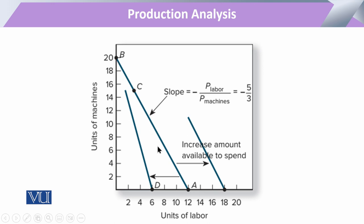اس ISO cost line کے right side پہ move کریں تو وہ part show کرتا ہے کہ expenditure incurred on production has increased۔ اور اگر decrease in budget کو show کرنا ہو تو leftward کی line draw کریں گے۔